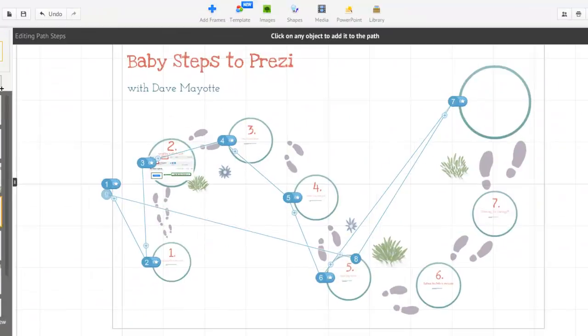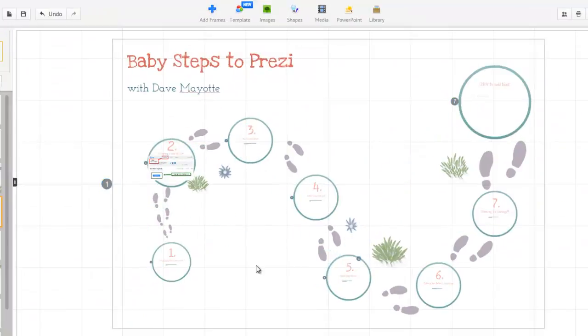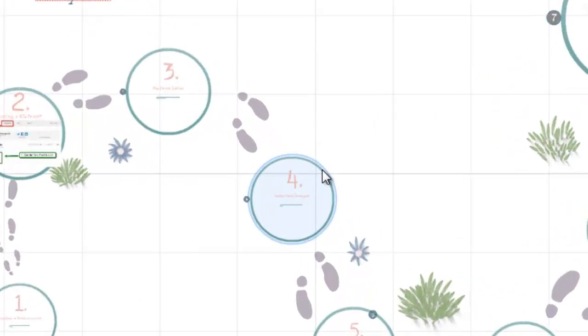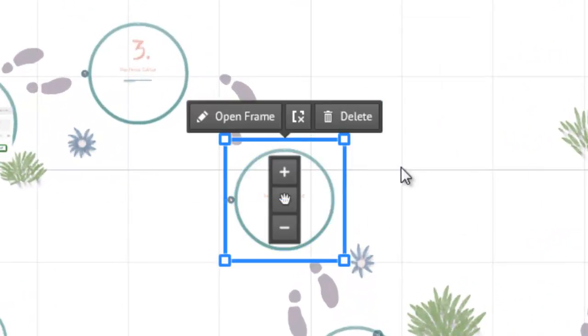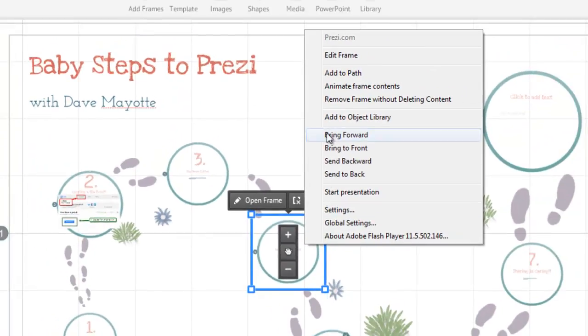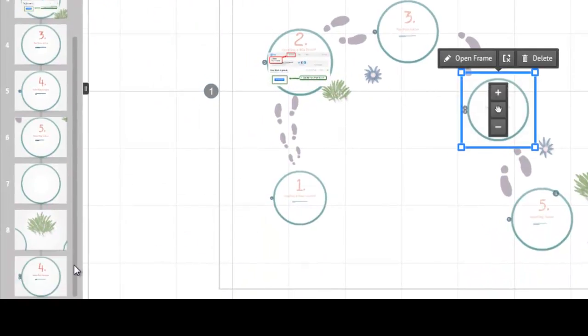The second way is, in my opinion, easier. And that is, if I go to any of these frames and I click on them, if I right-click, there is an Add to Path command. And if I do that, if I click Add to Path, it will always add it to the very end.